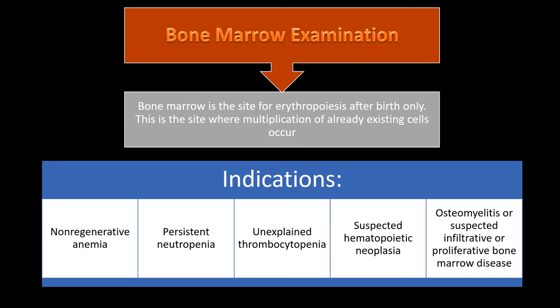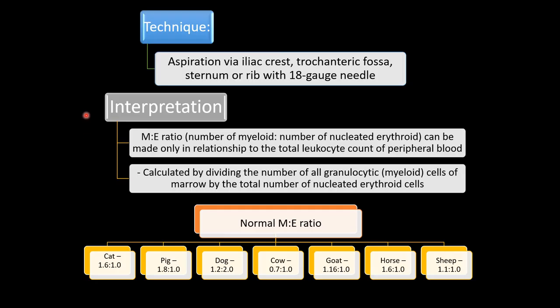Bone marrow examination can also assess erythropoietic activity. Aspiration can be done from the iliac crest, trochanteric fossa, sternum, or rib using an 18-gauge needle. Cell cytology count is performed along with the myeloid-to-erythroid (M:E) ratio — the number of myeloid cells to nucleated erythroid cells. Normal M:E ratios vary by species.